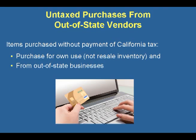As a seller of tangible personal property, you are entitled to purchase the items that you'll resell without payment of tax. However, if you are purchasing consumable supplies that you are not reselling, such as paper or toner, fixed assets such as a copier, or other tangible personal properties such as computer screen cleaner, you should pay the tax on those purchases. If you purchase these items from a retailer located outside of California that does not charge the California tax, you owe California use tax on the purchase price of the property.